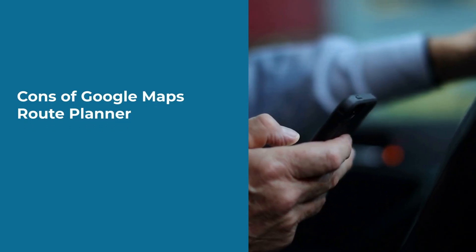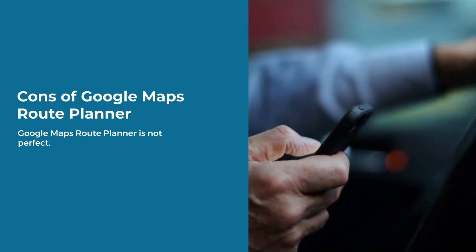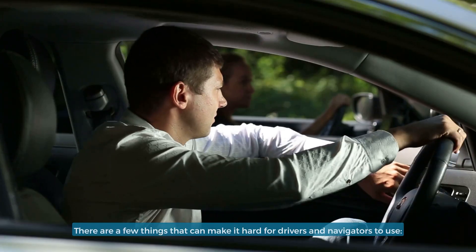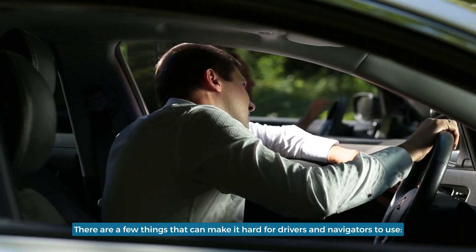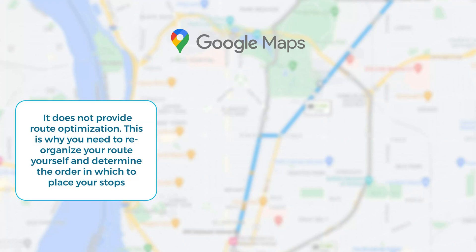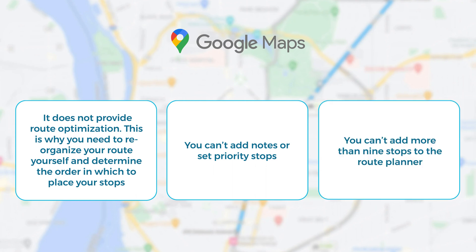Cons of Google Maps Route Planner: it does not provide route optimization, which is why you need to reorganize your route yourself and determine the order in which to place your stops. You can't add notes or set priority stops, and you can't add more than nine stops to the route planner.